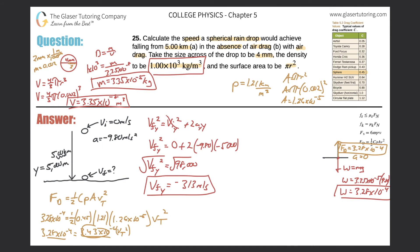Taking the square root, the terminal velocity of this raindrop is 9.78 meters per second. This equals roughly the numerical value of g, but it's a speed — not an acceleration. It's not a terribly fast speed, which is why getting hit by a raindrop doesn't knock you out.